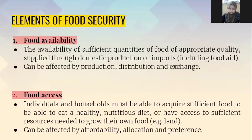The second one is food access. Individuals and households must be able to acquire sufficient food to eat a healthy, nutritious diet, or have access to sufficient resources needed to grow their own food. Food access can also be affected by affordability, allocation, and preferences.